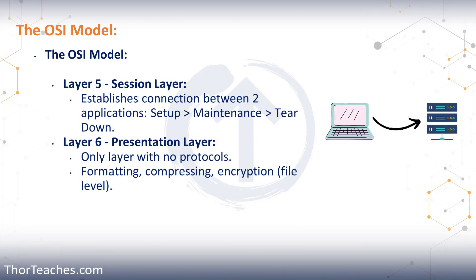Next up we have layers 5, 6, and 7. We cover those together because they're a lot more integrated than the other layers — the PDUs for layers 5, 6, and 7 are all data, and there's not really a lot happening on those layers. Layer 5 is the session layer: it establishes, maintains, and stops the connection between endpoints. Layer 6 is the presentation layer: it does the formatting, compression, and encryption on a file level for the data we send.